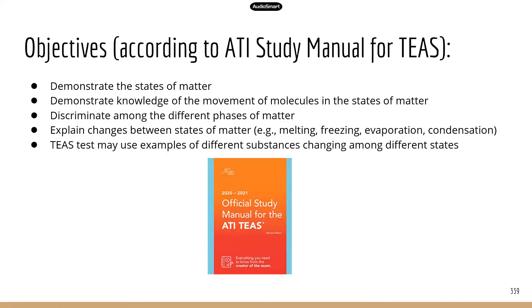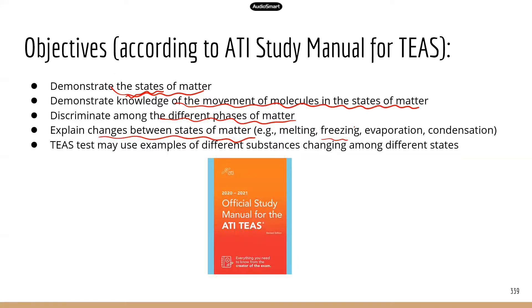We're going to talk about the three main different states of matter, and then we're going to talk about the movement of molecules in different states. We will differentiate between the different phases of matter, and then we'll look at the changes between states of matter. For example, melting — that's from solid to liquid. Freezing — that's from liquid to solid. So we'll look at what happens to heat, to energy, when matter transitions from one state to another.